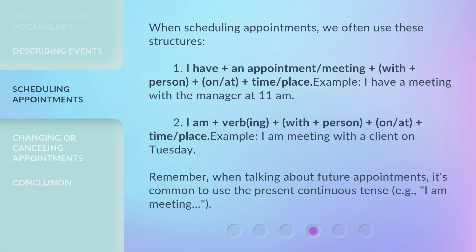When scheduling appointments, we often use these structures. First: I have an appointment or meeting with a person, on or at, plus time or place. Example: I have a meeting with the manager at 11 a.m. Second: I am verb-ing with a person, on or at, plus time or place. Example: I am meeting with a client on Tuesday.